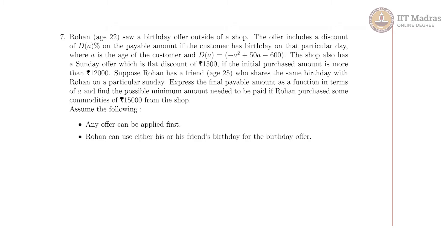Our seventh question says that Rohan has age 22 and he saw a birthday offer outside a shop. The offer includes a discount of DA percent on the payable amount if the customer has a birthday on that particular day, where A is the age of the customer and DA is a given function. The shop also has a Sunday offer which is a flat discount of 1500 if the initial purchase amount is more than 12,000.